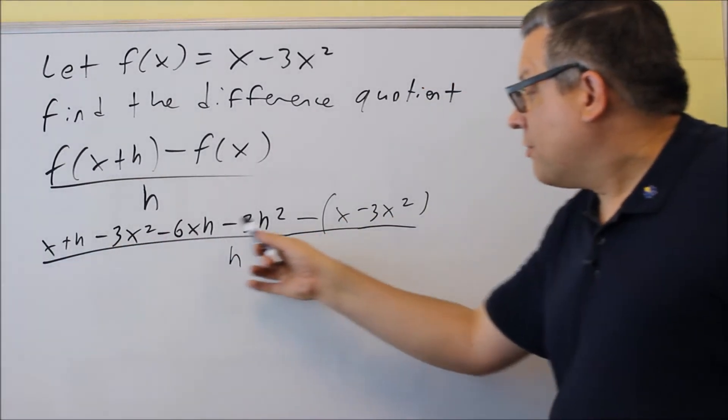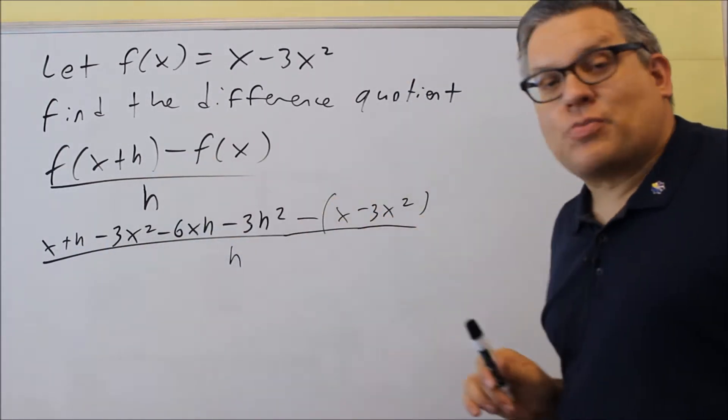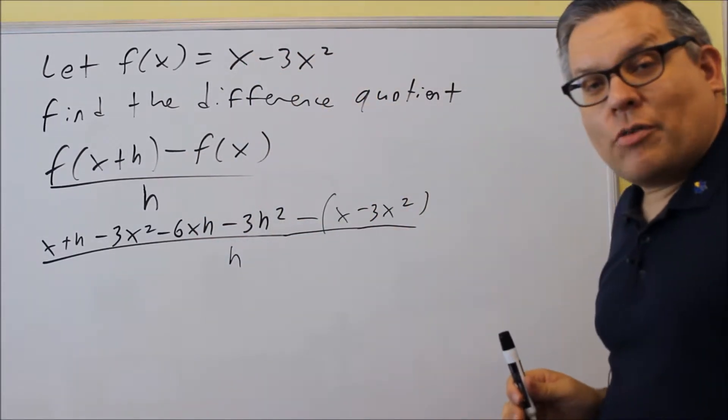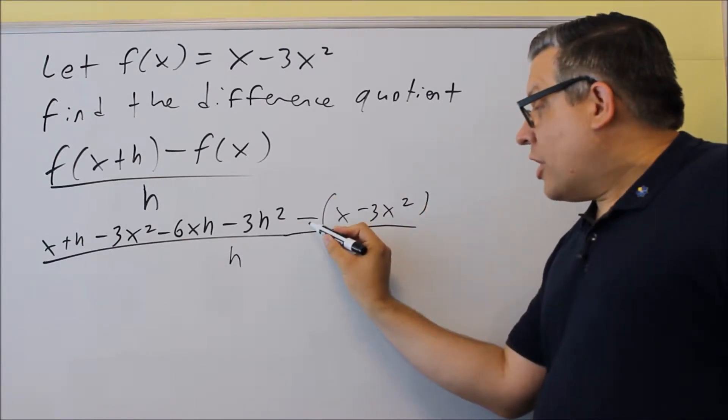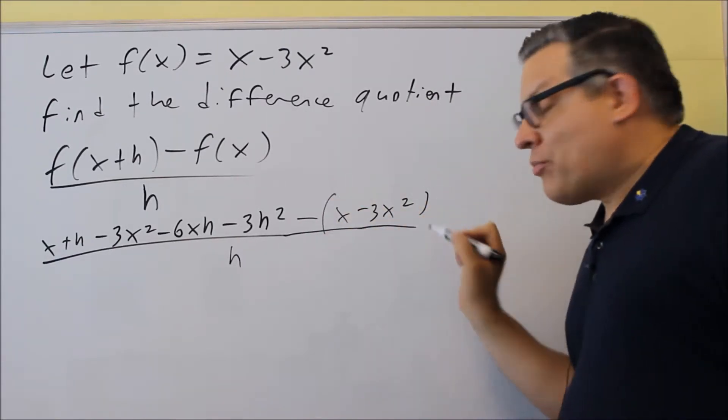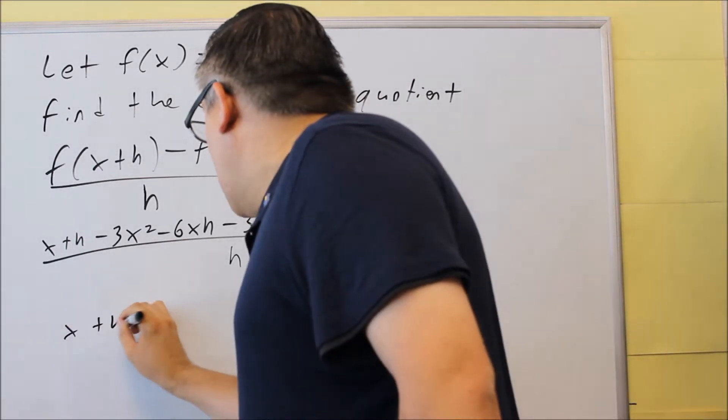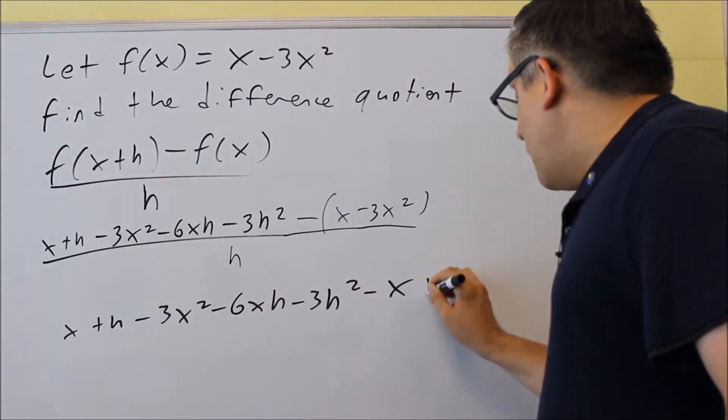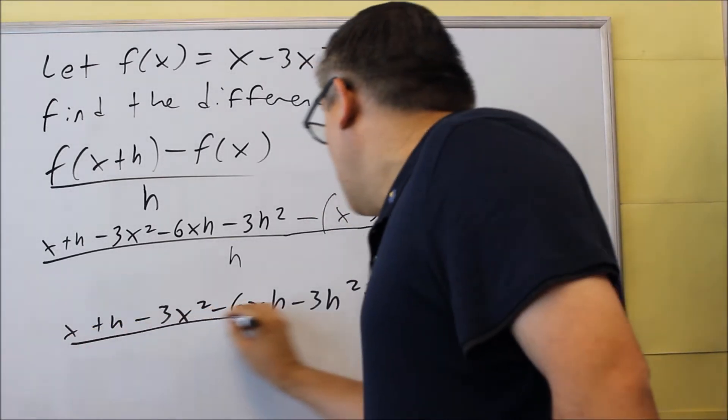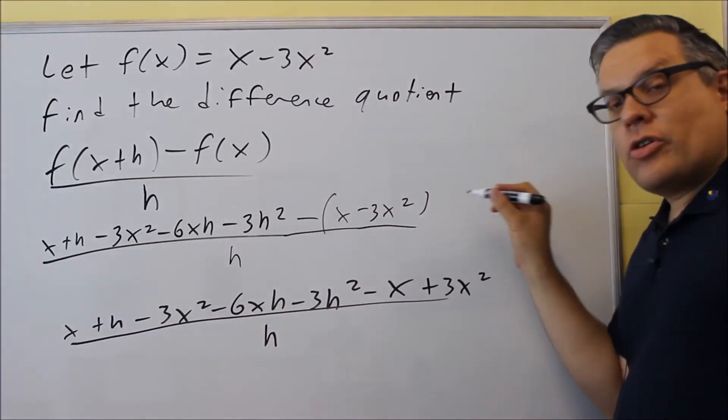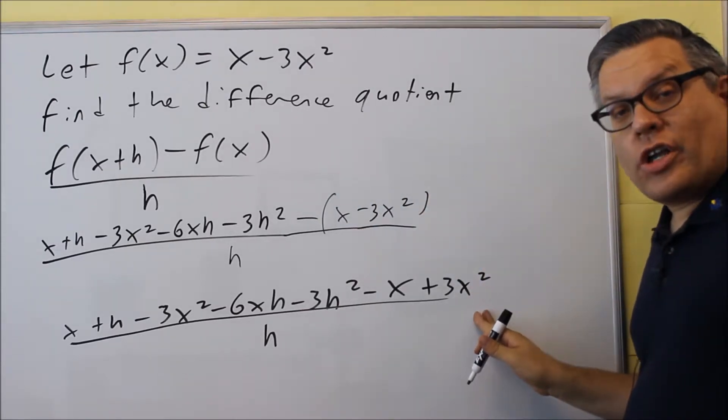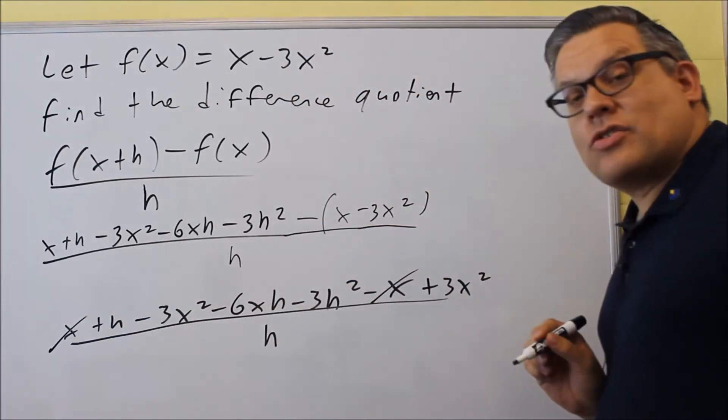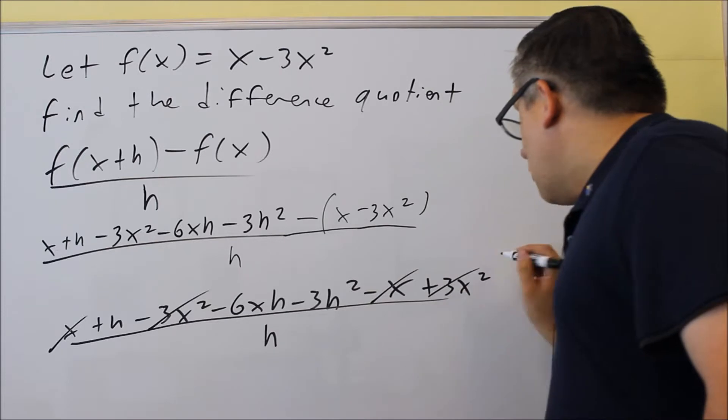So here's the first part. From here to here, this section right here, that's your f(x+h). Minus sign would be the same minus sign in the formula. And then f(x) would be your function that you have here. So now we want to distribute this. Remember that you're subtracting the entire function, so that's why I've got to have parentheses around the whole thing. Now, it's important to distribute the negative because now we're going to get some things that we can cancel out on top here. There's an x that cancels with a negative x there. Negative 3x² cancels with positive 3x² here.